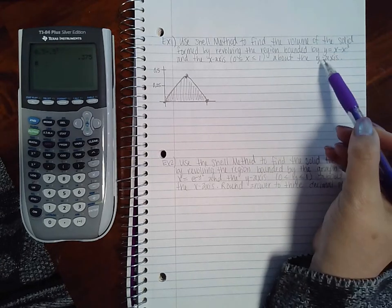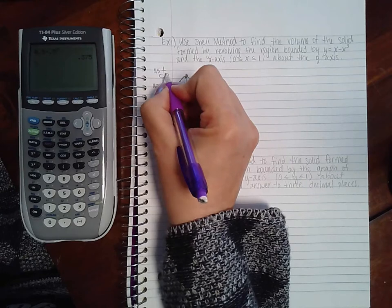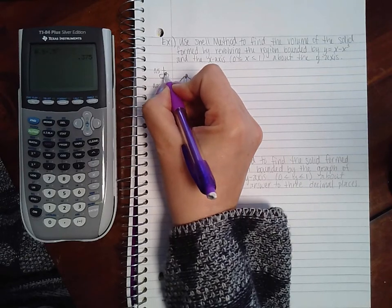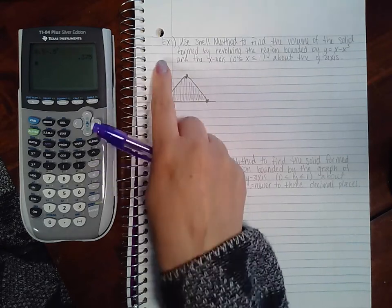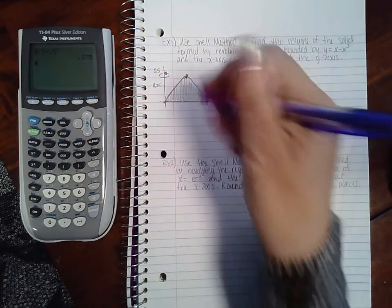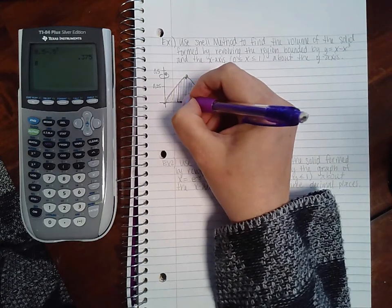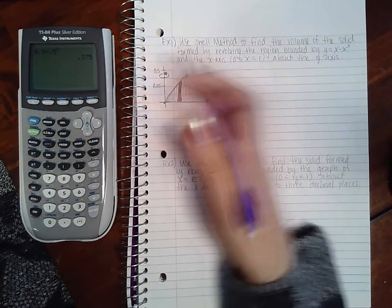And I'm revolving about the y-axis, so I'm actually revolving around this. Now since my line of revolution is vertical and I am talking about the shell method, that means that my rectangles should also be vertical.